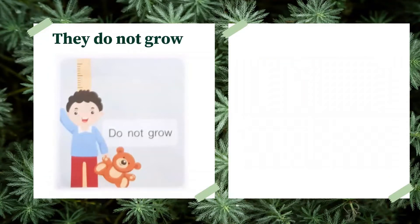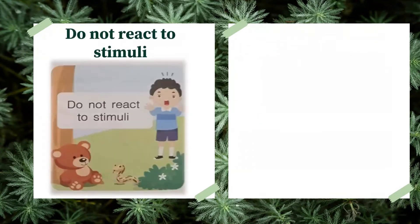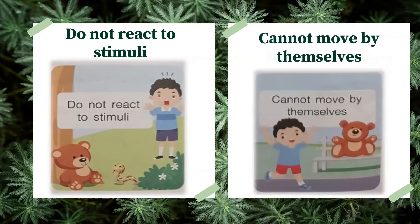They do not grow — non-living things do not grow. Next, they do not have body waste. Next, they do not react to stimuli — even if you scare them, they will not react, they do not get startled. Also, they cannot move by themselves. Unlike humans and animals, non-living things cannot move. So those are the key features of non-living things.